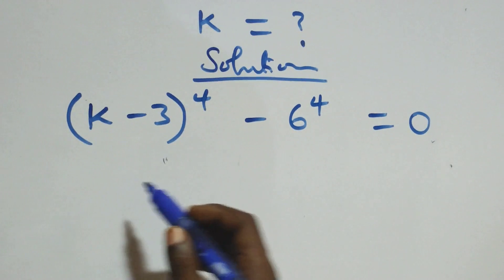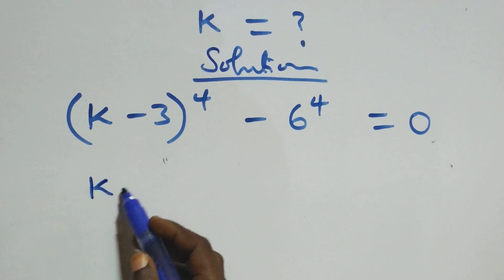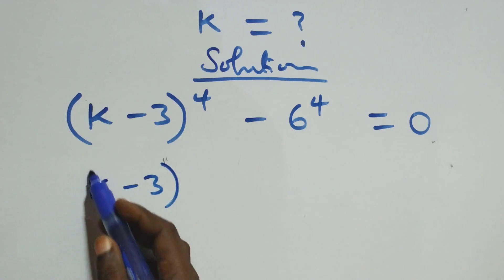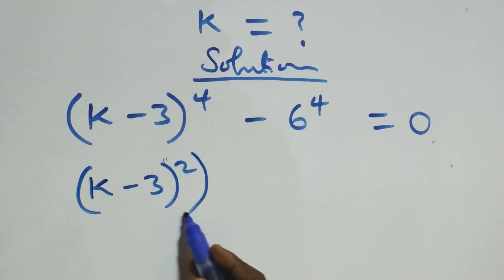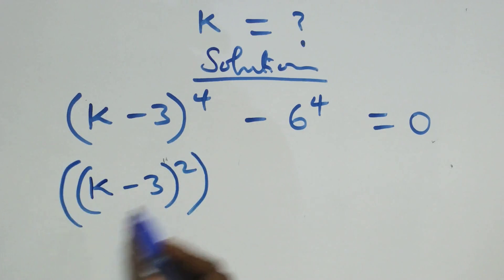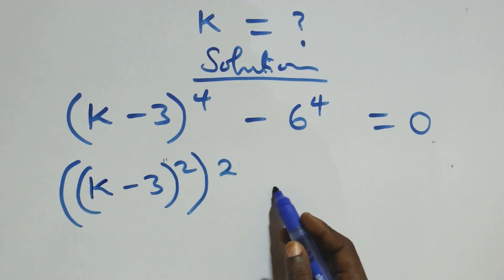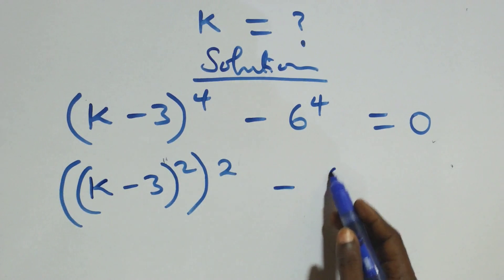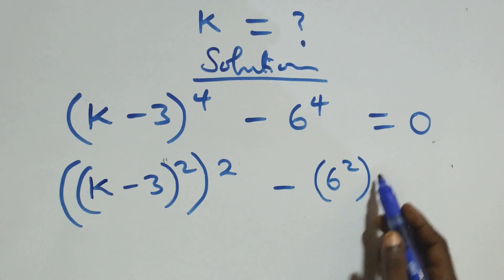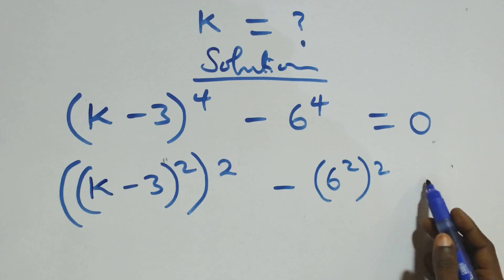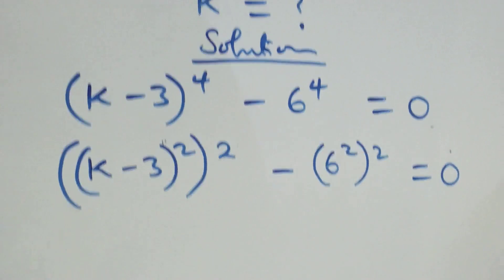Next step, we can rewrite this as (k minus 3) raised to the power 2, then raised to the power 2, which gives us 4. Then minus 6 raised to the power 2, raised to the power 2, equals 0.